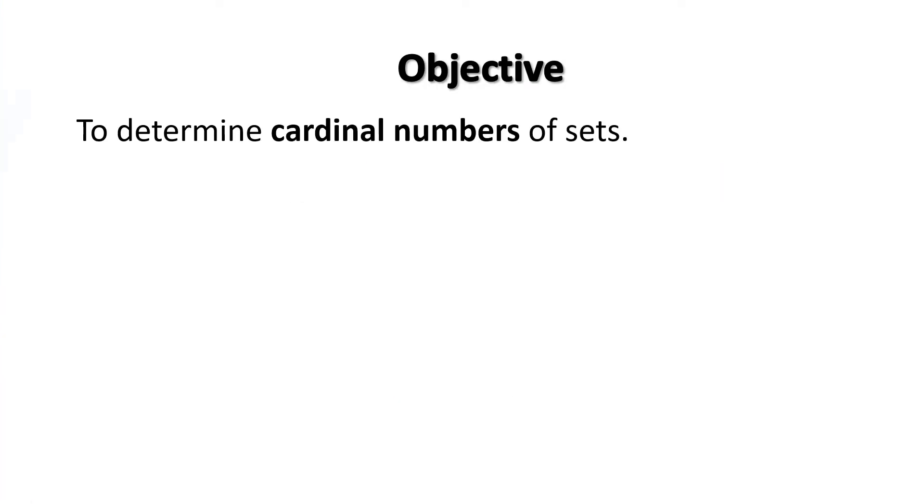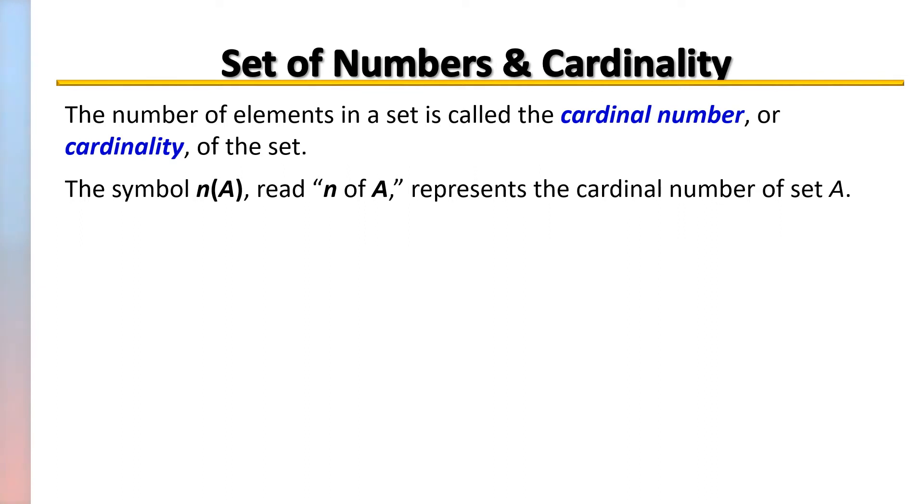The number of elements in a set is called the cardinal number of a set or the cardinality of the set. The symbol n with parentheses of the set, for example n(A), represents the cardinal number of set A.